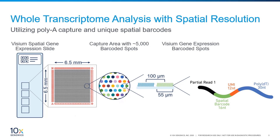The center-to-center distance between spots is 100 microns. If we look at each spot, we can see that it is made up of a high-density lawn of millions of spatially barcoded probes. These contain a partial TruSeq adapter, a 16-base spatial barcode unique to each spot, a 12-base UMI (unique molecular identifier) unique to each probe, and a 30-base poly-dT region that hybridizes to poly-A mRNA.